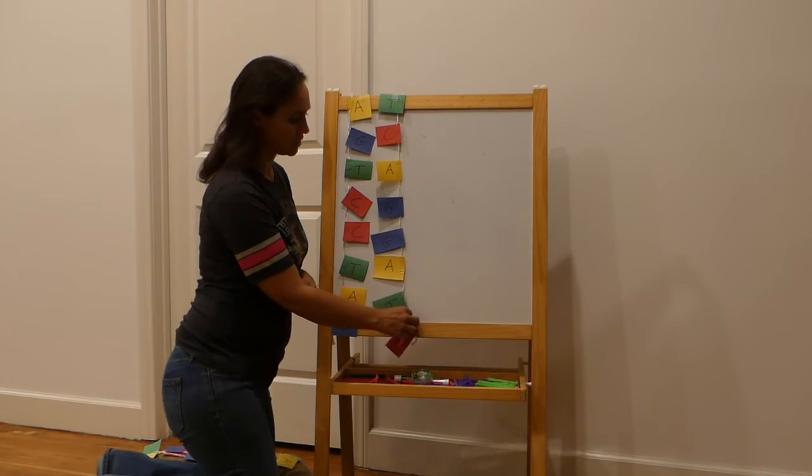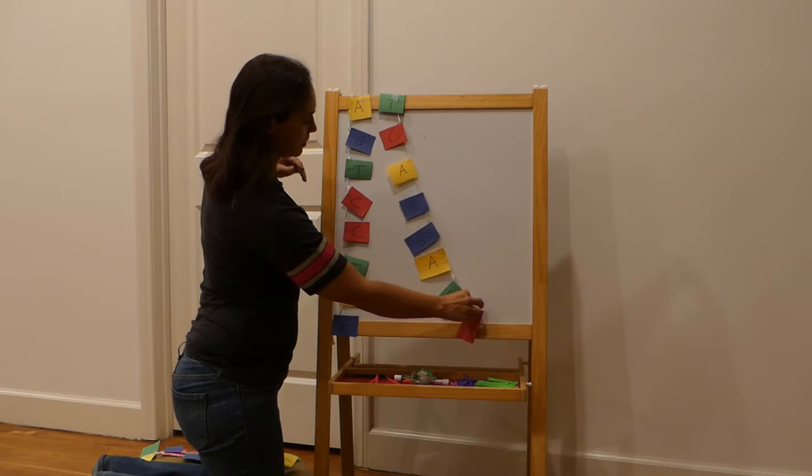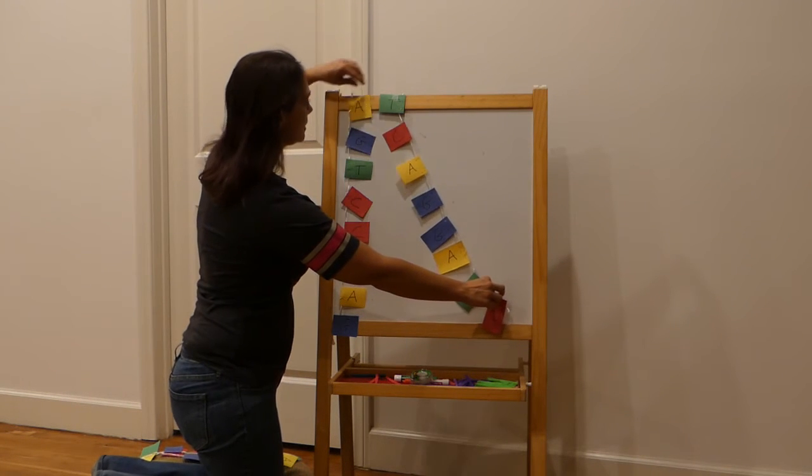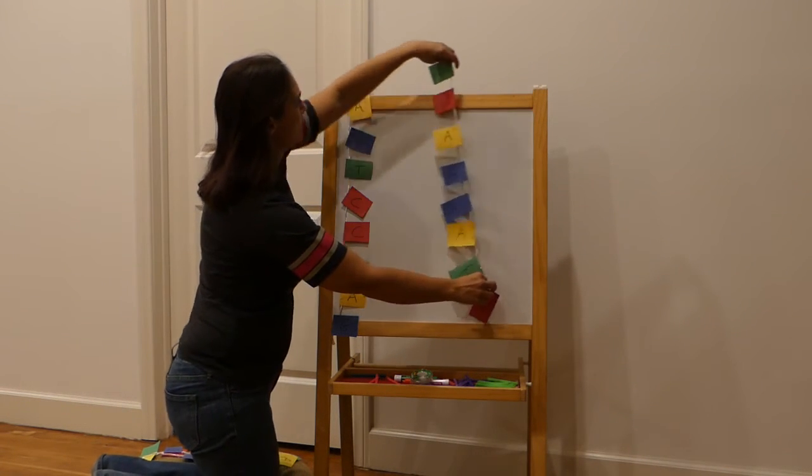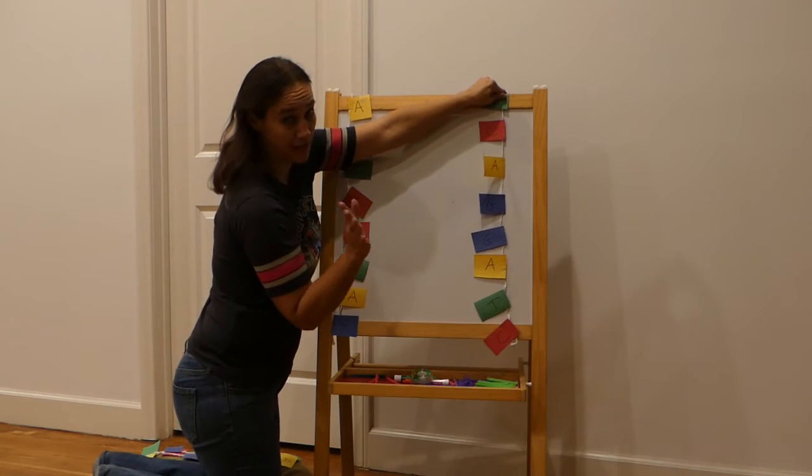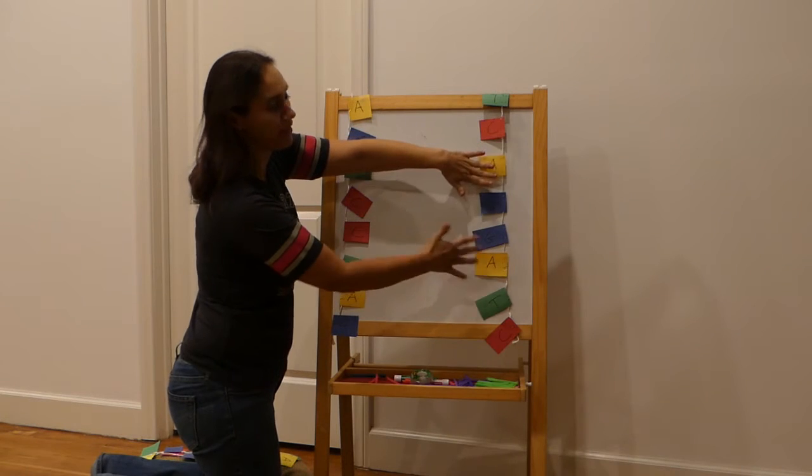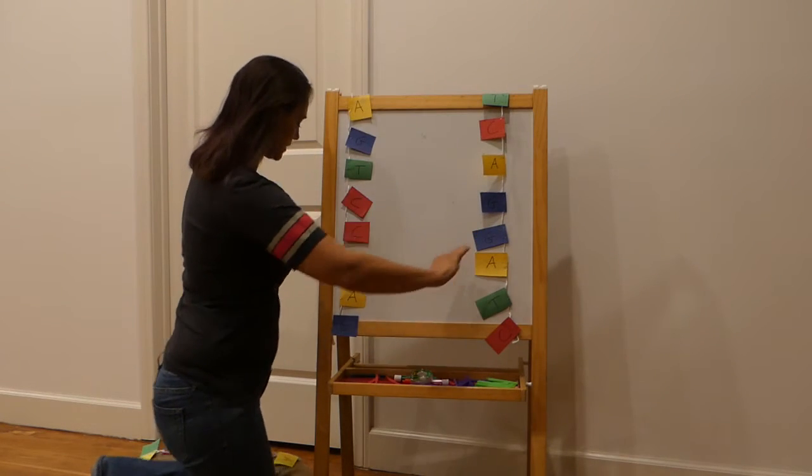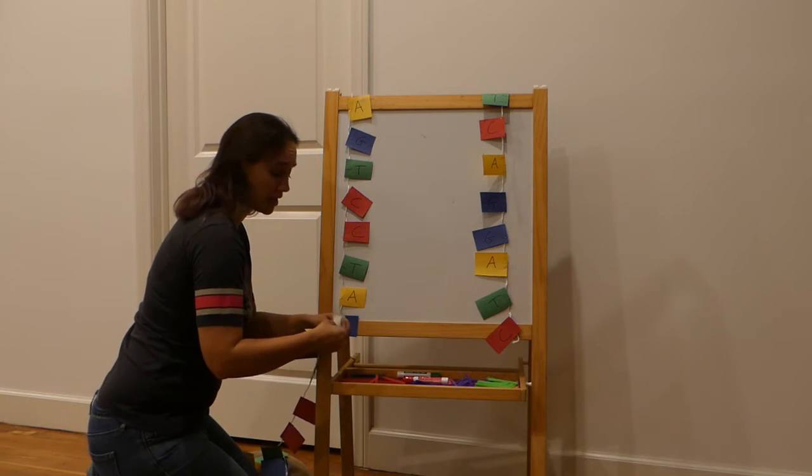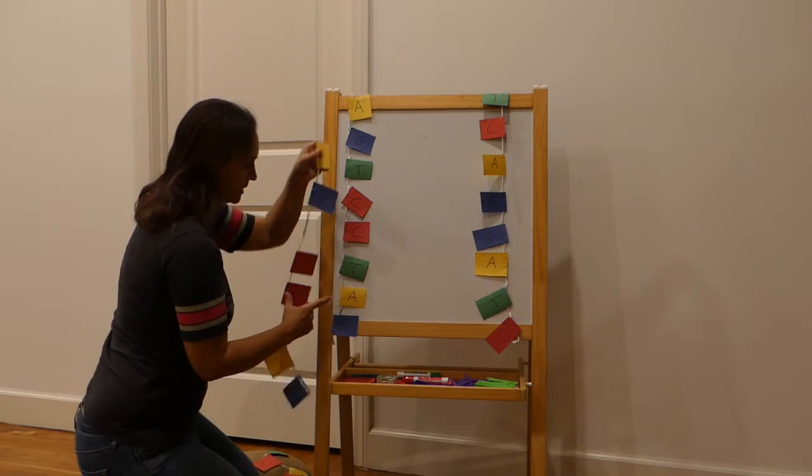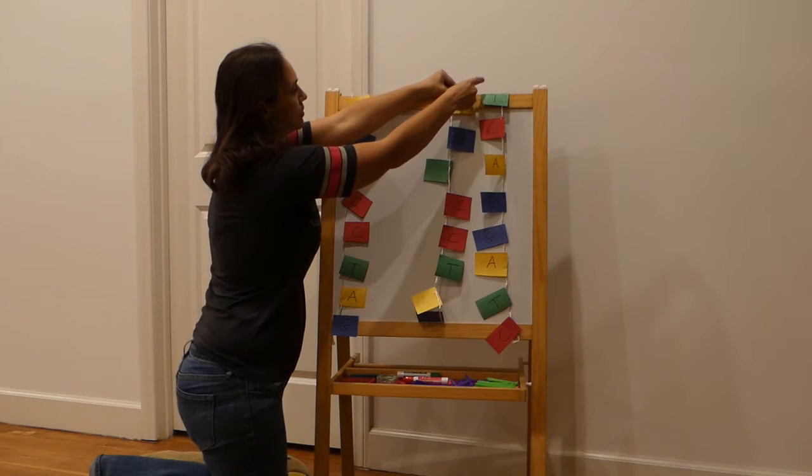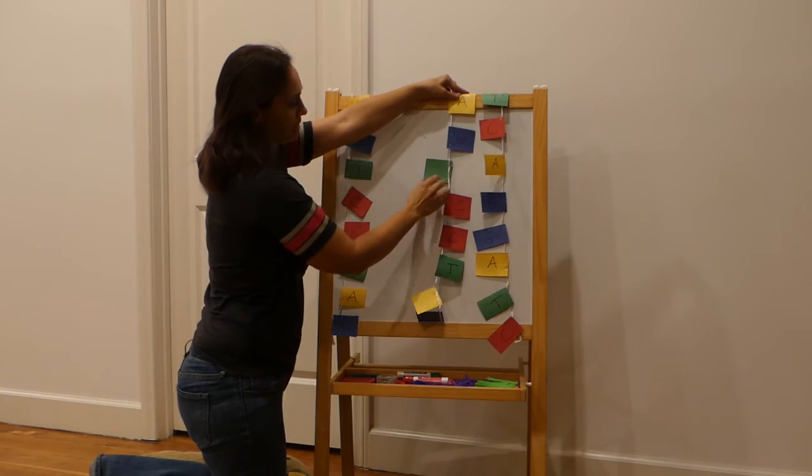It's actually going to start unzipping like so, and as it unzips and kind of separates out, all this is happening at the same time so it doesn't just separate and move over. But as it's unzipping, what's happening is new base pairs are being added to the base pairs that have been unzipped.